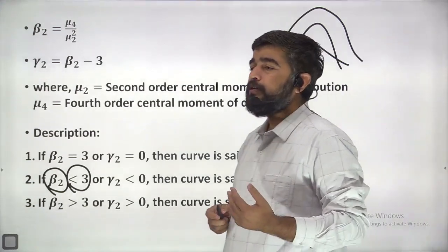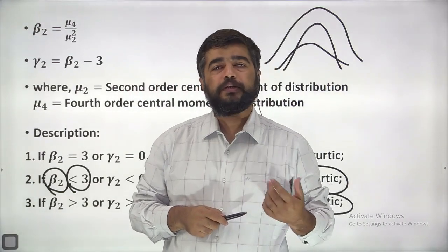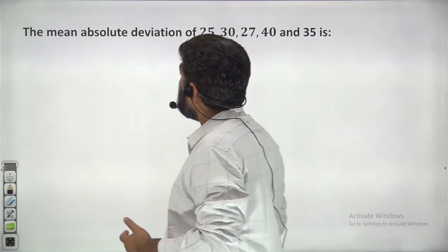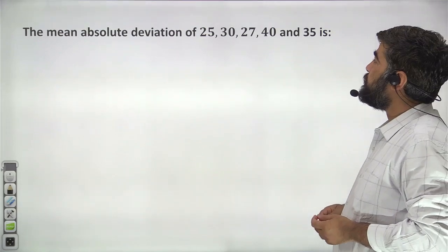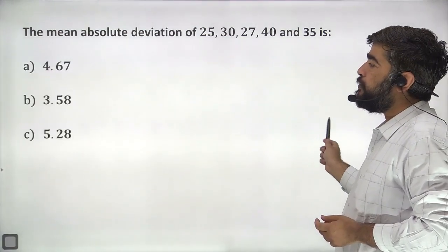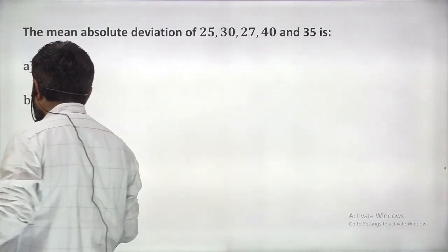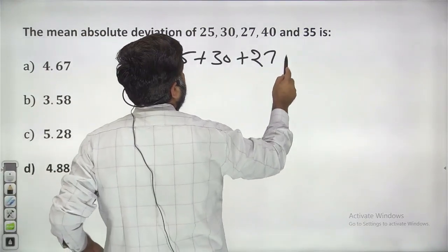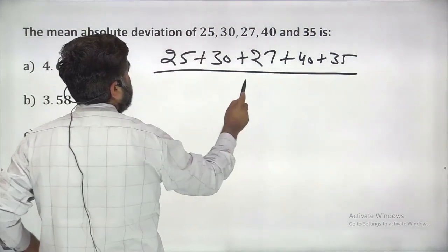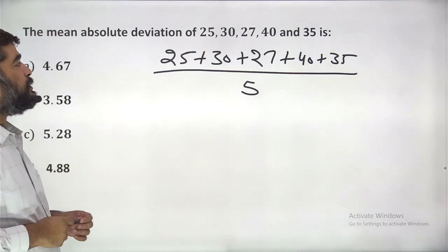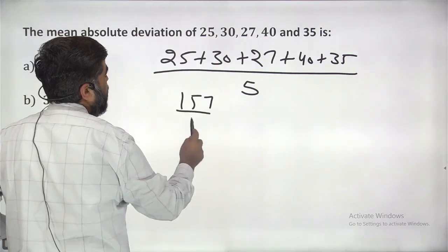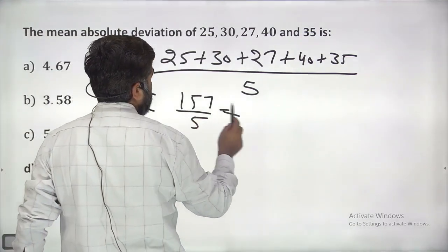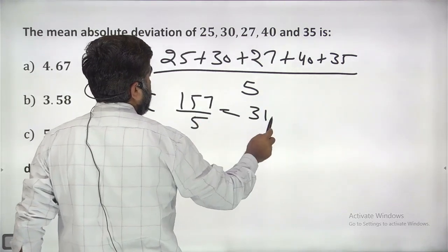As we have learned in our chapter on kurtosis and skewness. Next question: the mean absolute deviation of 25, 30, 27, 40, and 35 is — you have four options. To find out the mean deviation, first you have to find out the mean. Mean will be 25 plus 30 plus 27 plus 40 plus 35 divided by 5, which is 157 by 5, so the mean is 31.4.